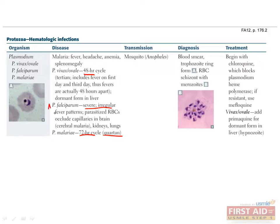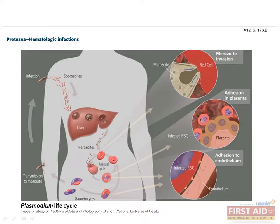P. falciparum is the most severe malarial infection because it can involve the brain, kidneys, and lungs. P. vivax and ovale are unique in that there is a dormant form of the parasite known as a hypnozoite that can hide in the liver and reinfect the patient at another time. Therefore, you must add primaquine to your antibiotic regimen when treating P. vivax or P. ovale to target these dormant forms. Plasmodium has a life cycle involving the liver and blood. An Anopheles mosquito transmits Plasmodium to a human during a blood meal. Plasmodium sporozoites enter the bloodstream and travel to the liver, where they infect hepatocytes, multiplying into merozoites until they rupture the hepatocytes and escape back into the blood.